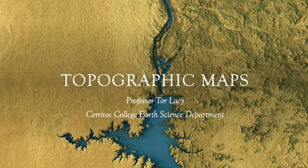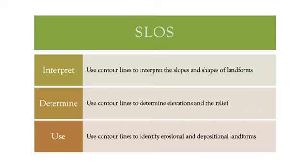Hi, this is Tor Lacey with a lecture about topographic maps. Our main learning objectives include: use contour lines to interpret slopes and the shapes of landforms, use contour lines to determine elevations and the relief, and use contour lines to identify erosional and depositional landforms.